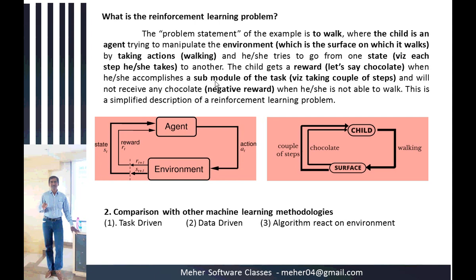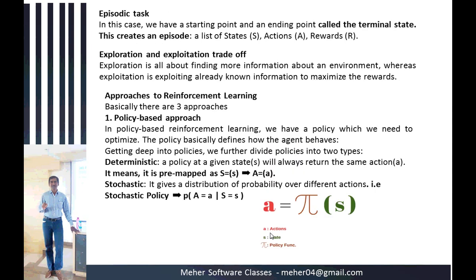This mechanism works like: if the child successfully walks, we give a chocolate reward, and they will keep trying. But if we give chocolate when the child is not able to walk, that is not reinforcement learning — reward is not sufficient in that case. Reinforcement learning can be compared with other machine learning approaches that are task-driven, data-driven, and algorithm-reactive to the environment.